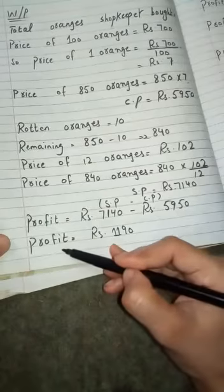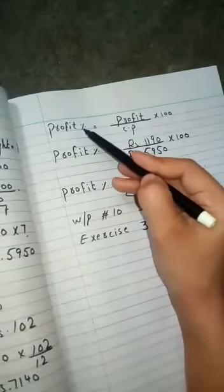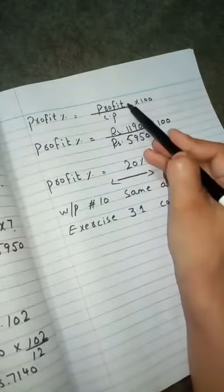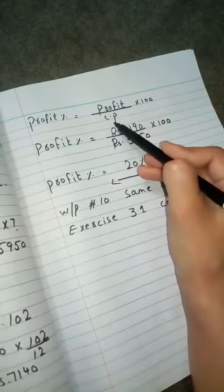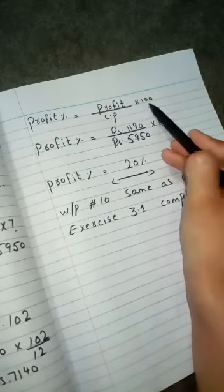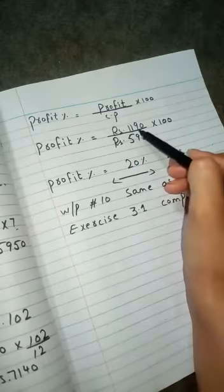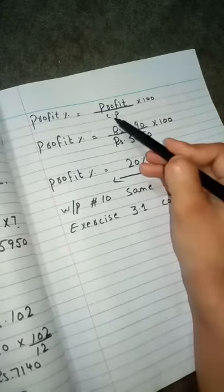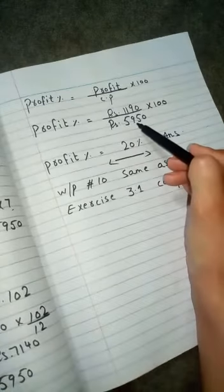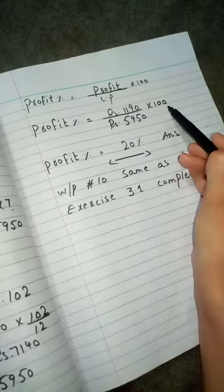Now after finding the profit we are going to require the finding profit in percentage. So the formula is profit divided by cost price multiply 100. Profit wala answer 1190 aja ga, cost price ke jaga 5950 multiply 100.